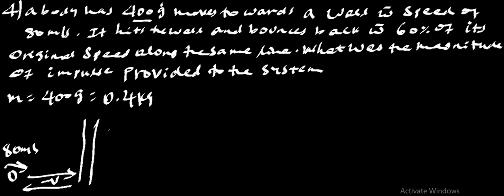If it hits the wall and bounces back. Since velocity is the vector physical quantity, it can be negative. Therefore, it hits the wall and bounces back with 60% of its original speed. What was the magnitude of the impulse provided to the system?